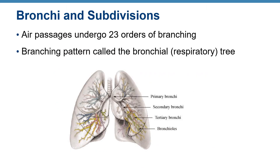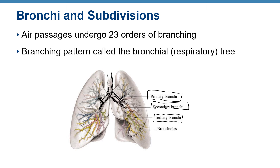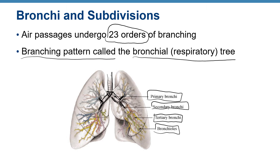The carina is the last cartilage of the trachea, where it branches into right and left primary bronchi. The primary bronchi divide into secondary bronchi — two on the left and three on the right — then into tertiary bronchi, then bronchioles. There are 23 orders of divisions in total, and this entire branching pattern is called the bronchial or respiratory tree.